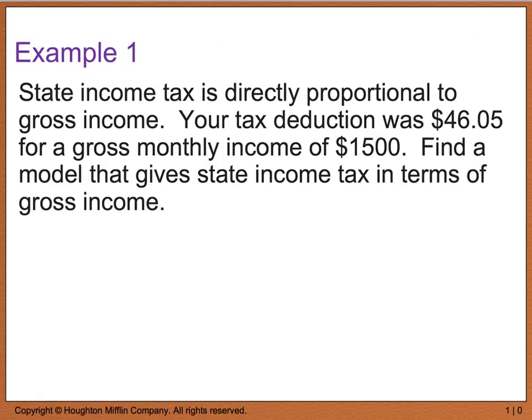Example 1 says that the state income tax is directly proportional to gross income. Your tax deduction was $46.05 for a gross monthly income of $1,500. We want to find a model that gives a state income tax in terms of the gross income. Because you're given this phrase that says directly proportional to, you should automatically be thinking y equals kx. And then it's a matter of plugging in your numbers in the correct spot. So, we know that your deduction was $46.05, so I'm going to write that in for y. And our gross monthly income was $1,500, which is going to represent our x. So I really have some constant k times $1,500.